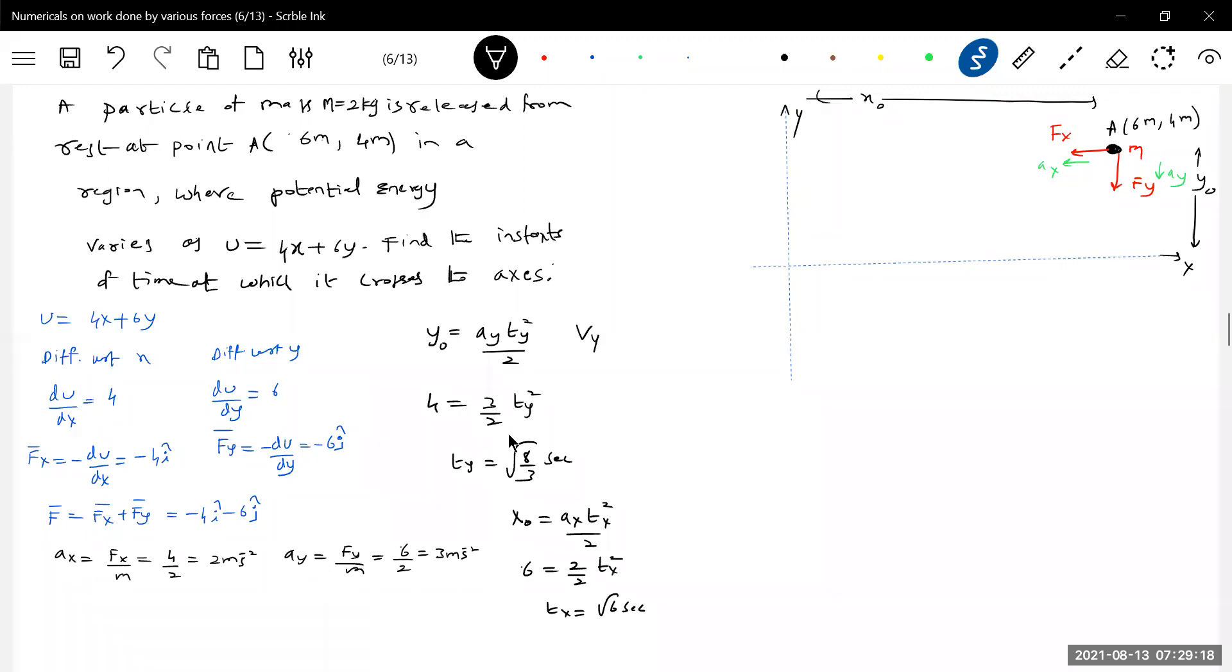We can calculate the speed when crossing the y-axis and x-axis. v₁y = ay·ty = 3·√(8/3) = √24 = 2√6 m/s. For the x-component, v₁x = ax·ty = 2·√(8/3).